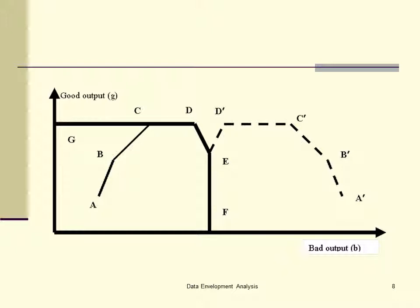So now, let's take a look at this picture. This picture actually shows you three approaches for treating the undesirable factors. In this case, you have one undesirable factor — bad output B — and one good output G. Now, supposedly, you can just treat these two outputs, the good and bad, just as the regular output. So in that case, you will have two outputs, and the frontier will be C, D, E, F. That's just the regular output frontier when you have two outputs.